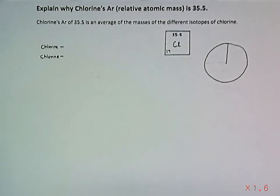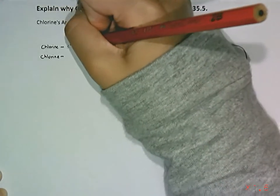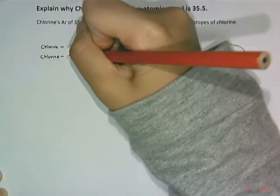So, chlorine has two different types of isotopes. One being chlorine 35, and the other chlorine 37.